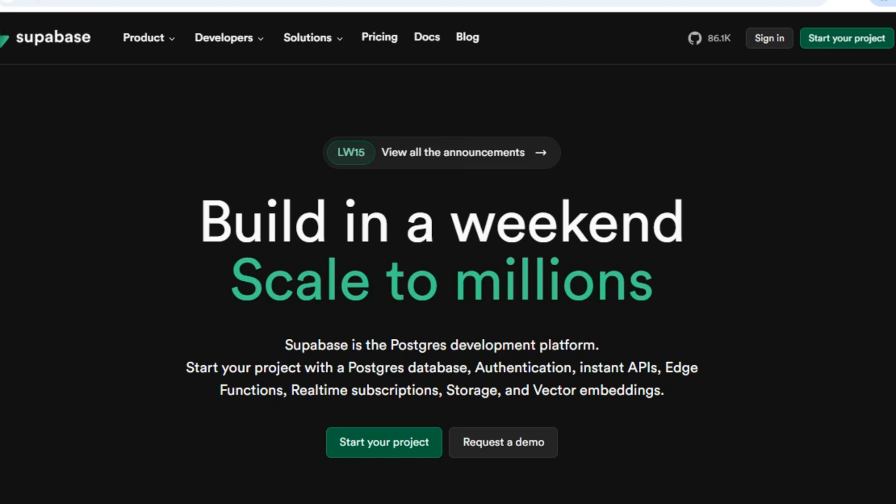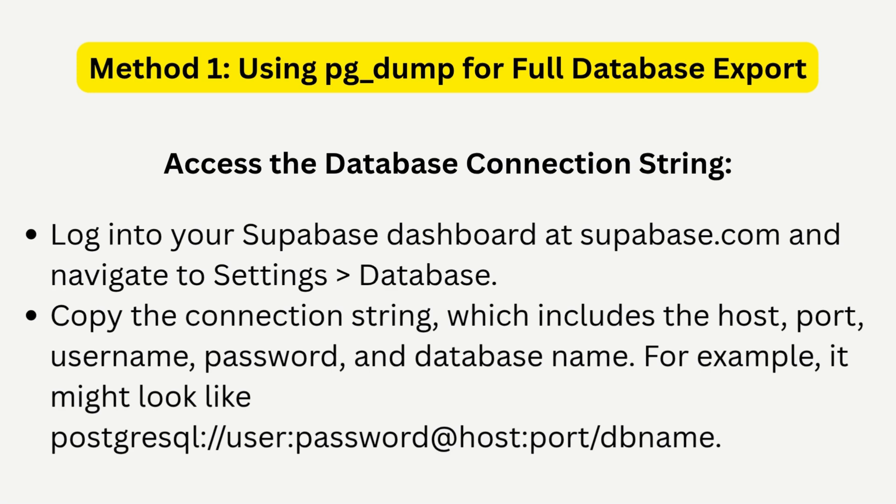The most reliable way to export your entire Supabase database is using PG Dump, a PostgreSQL tool. First, log into Supabase at supabase.com and go to Settings, then Database. Copy your connection string — it includes your host, port, username, and database name.